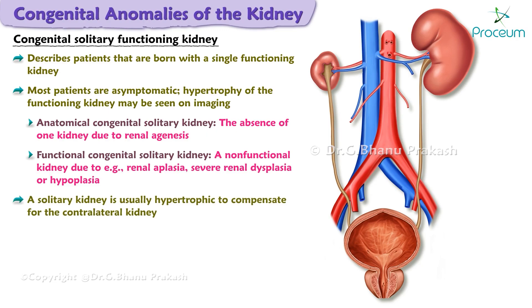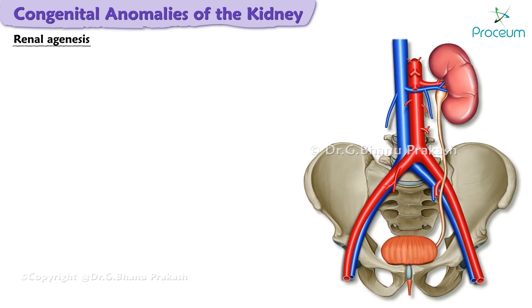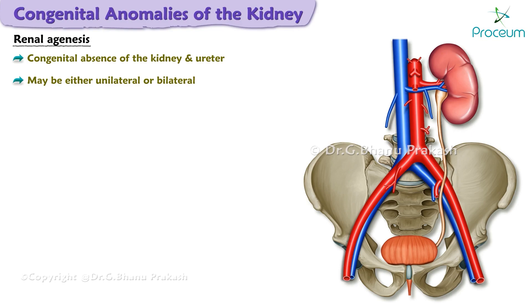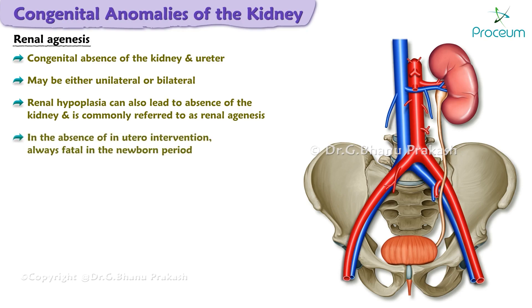A solitary kidney is usually hypertrophic to compensate for the contralateral kidney. There is an increased risk of hypertension, renal insufficiency, and progression to end-stage renal disease. Renal agenesis refers to a congenital absence of the kidney and ureter, which may be either unilateral or bilateral. Renal hypoplasia can also lead to absence of the kidney and is commonly referred to as renal agenesis. In the absence of in utero intervention, bilateral renal agenesis is always fatal in the newborn period.